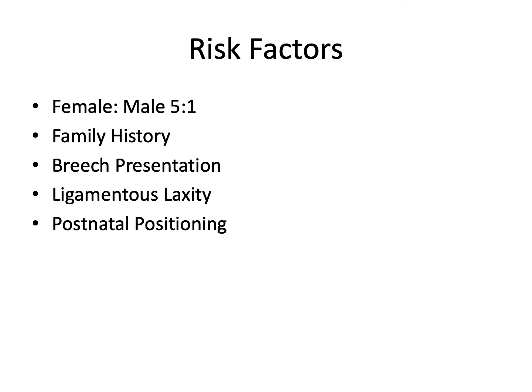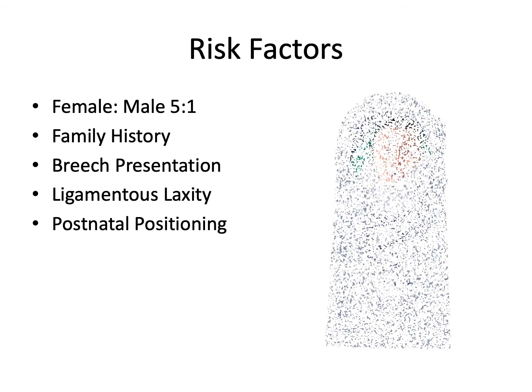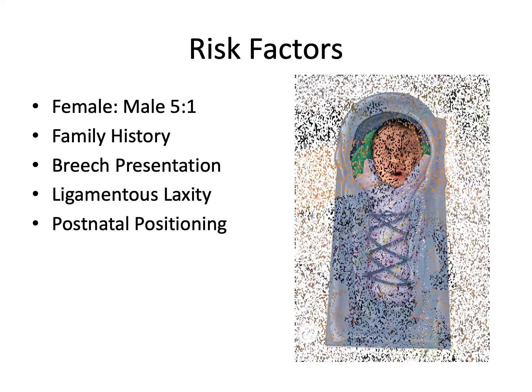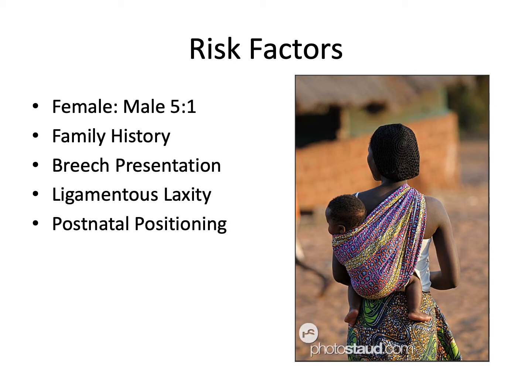Risk factors include the firstborn female, positive family history, breech presentation, generalized ligamentous laxity, and postnatal positioning of the hip like we see in this picture. Cultures that adopt abducted hip positions for babies seem to have less DDH.